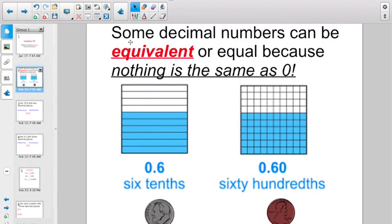To start off with, something that we learned yesterday, that some decimal numbers can be equivalent or equal because nothing is the same as zero. So, to kind of illuminate, right now here we have an example of six tenths, and over here we have 60 hundredths. They are exactly the same amount, aren't they, if you just look at pure blue space.